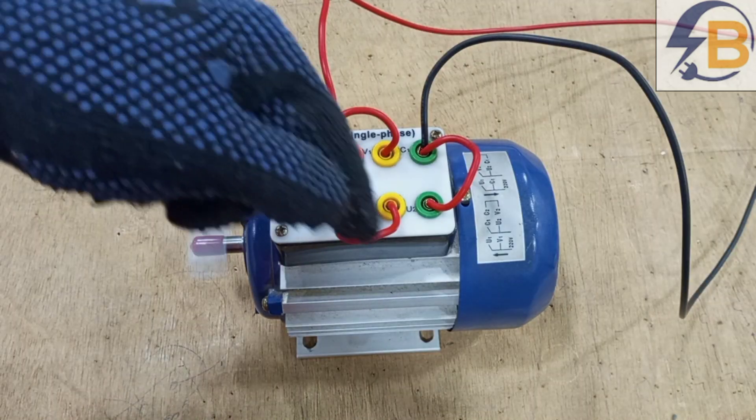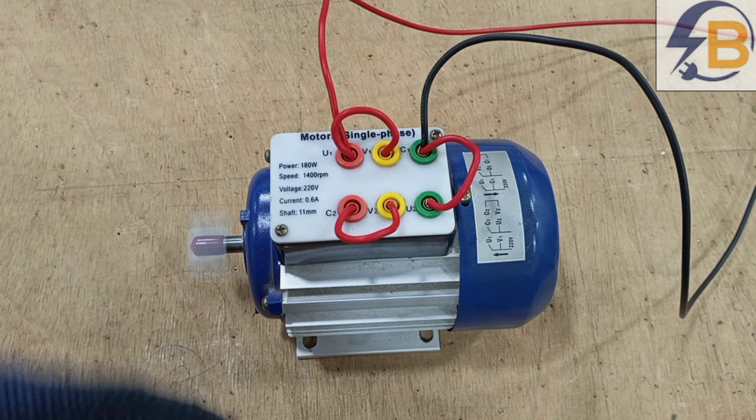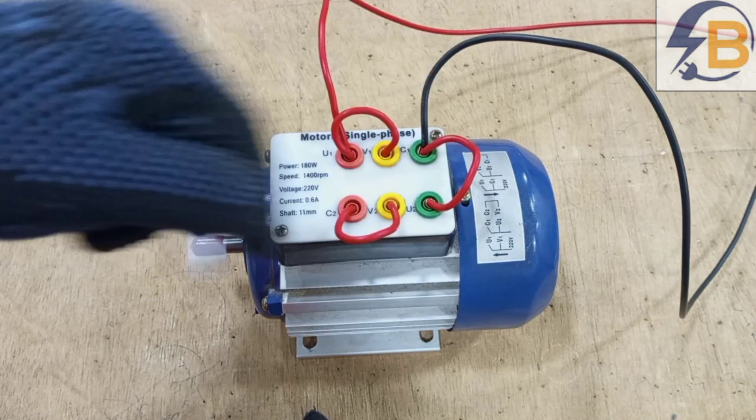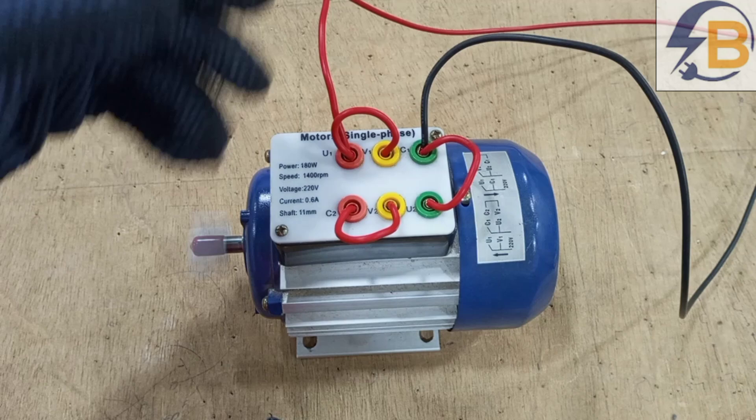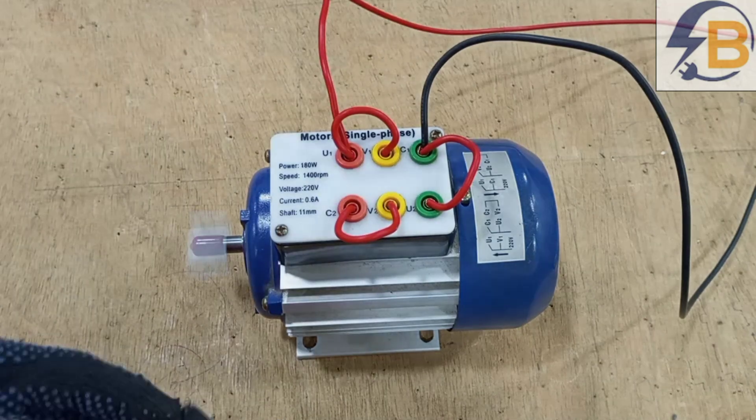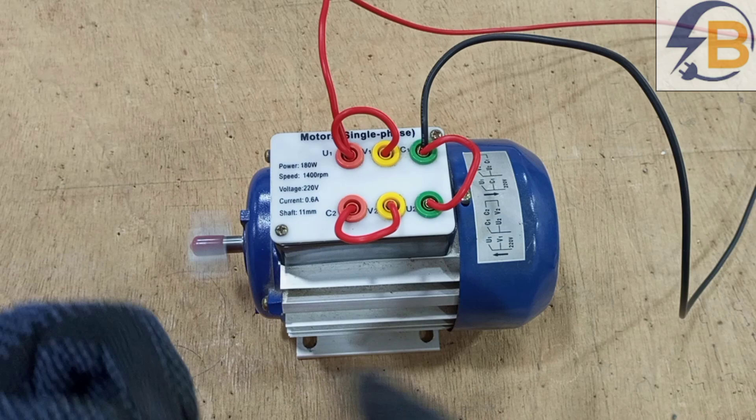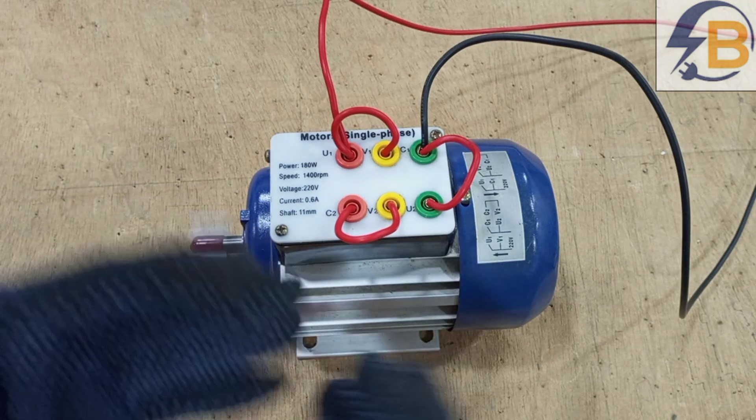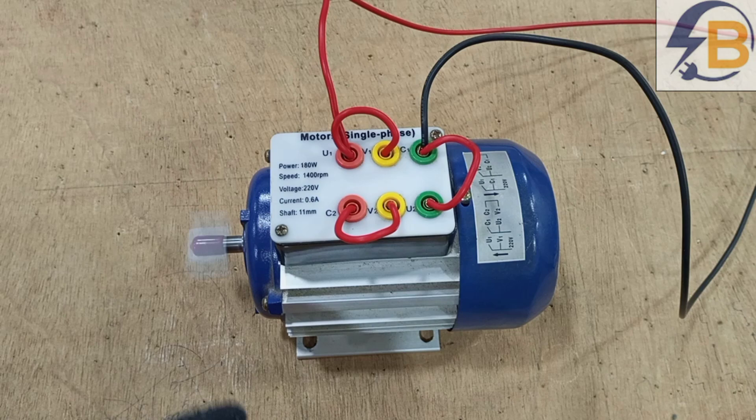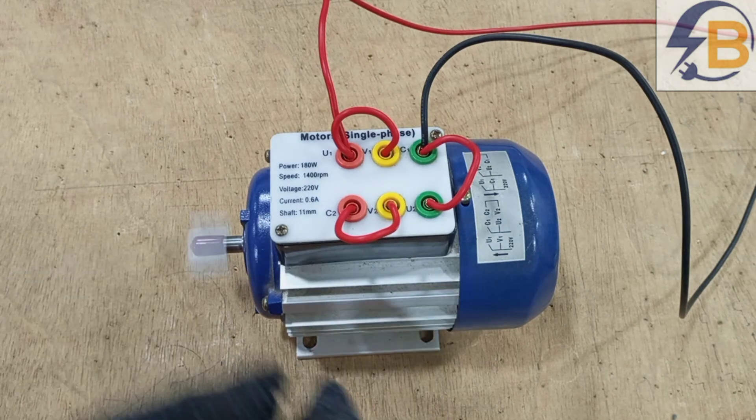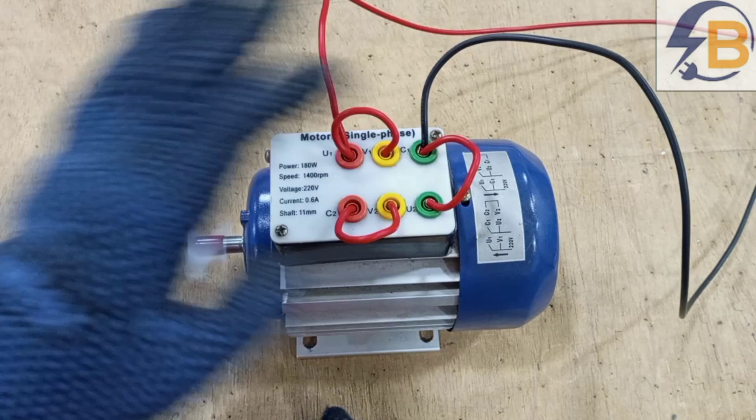Usually, these connections I have done are normally done. Most of the times, these connections I have done externally are usually done inside the motor. And then only two provisions will be made for connection to live and neutral. But actually, the various windings that are connected together and brought out are actually six. And if you have to arrange all these six connections by yourself, this is how you go about it.